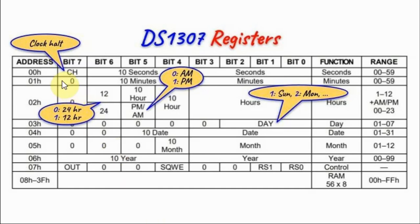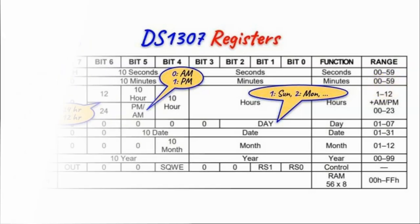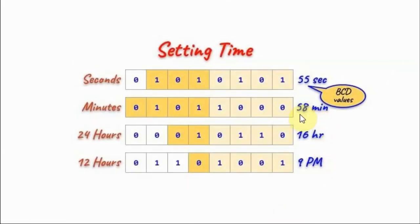Similarly, the minutes value is stored in the minutes register at location 01, with a range from 00 to 59, again in binary coded decimal. For example, to store 58 minutes: 8 in BCD is 1000, and 5 in BCD is 101.